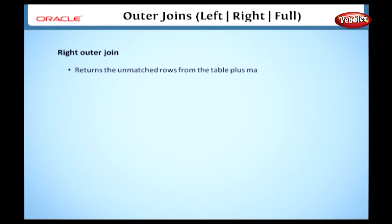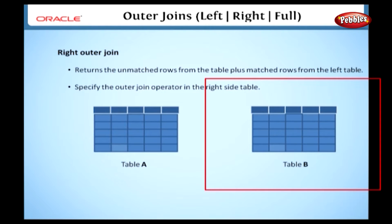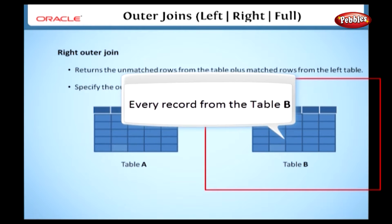Now let's see the right outer join. It is also like the left outer join, but the main difference is that it returns the unmatched rows from the right table, plus matched rows from the left table. If we join the tables in this manner, every record from the right table will appear in the joined table at least once. If no matching row from the left table exists, null will appear in columns from the left table for those records that have no match.